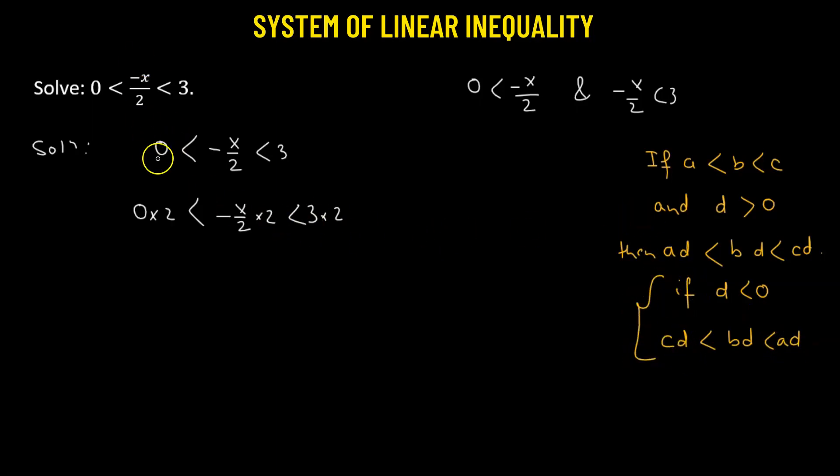Here we'll have 0 multiplied by 2, so that's 0 less than negative x over 2 multiplied by 2, which gives negative x less than 3 times 2, which is positive 6.